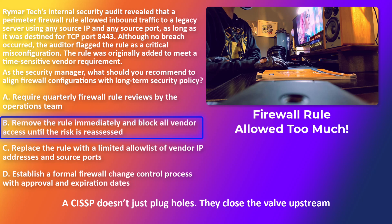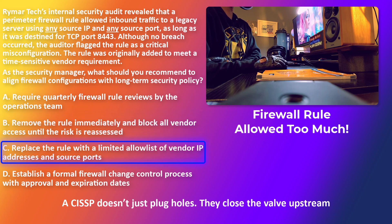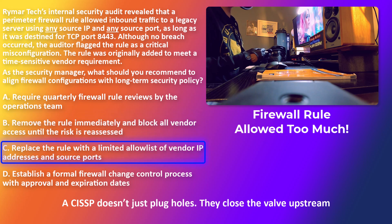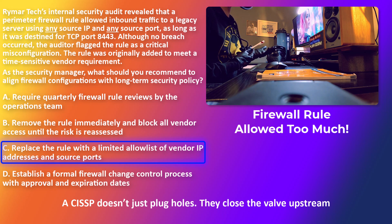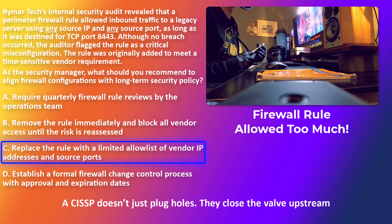Blocking access without coordination invites conflict, not compliance — and senior management does not like that at all. For choice C: limiting IP addresses is a technical improvement, but it doesn't solve the policy failure that allowed the risky rule in the first place. So what you have to do is choose process over panic.